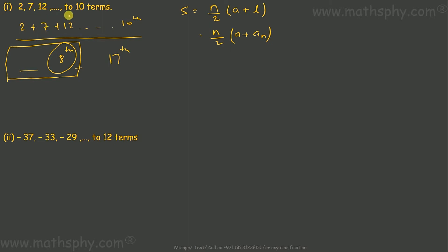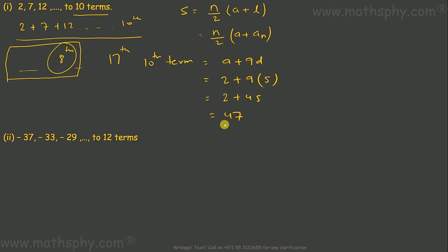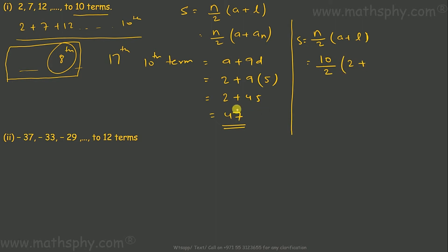It says up to 10 terms, so first we need to find the 10th term. The 10th term is a plus 9d. Here a is 2, and d is 7 minus 2 equals 5. So 2 plus 9 times 5 equals 2 plus 45 equals 47 — that is my 10th term. The sum is n over 2 multiplied by a plus the last term: that is 10 over 2 times 2 plus 47.